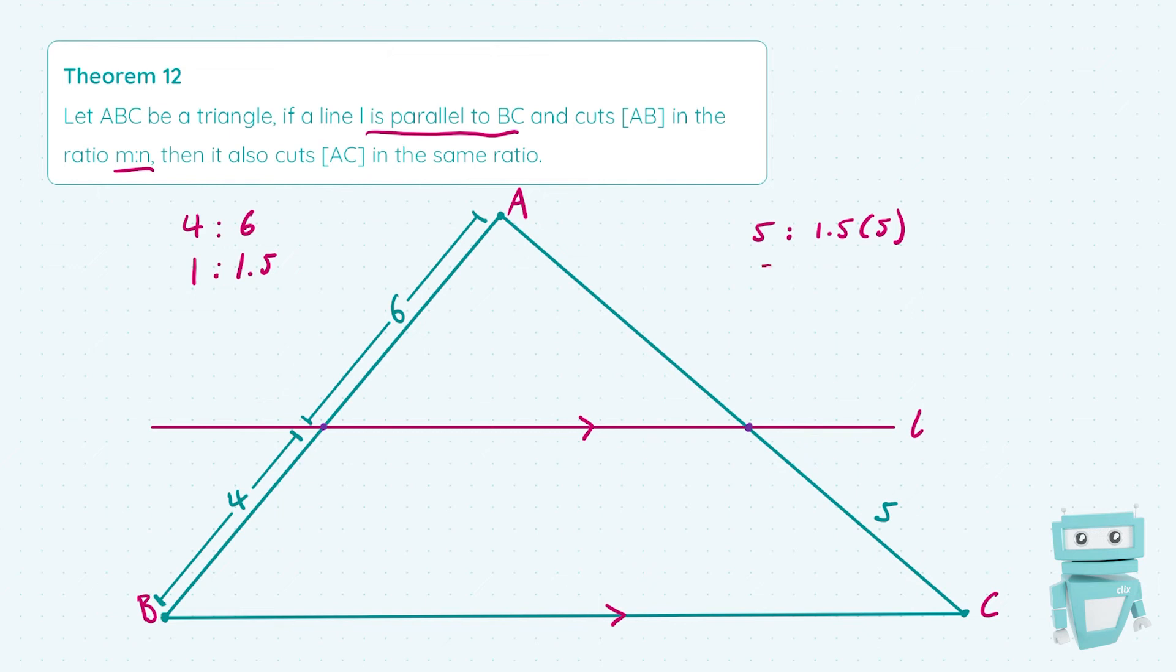So 1.5 times 5 means our ratio on the right-hand side, which is going to be the same as 1 is to 1.5, is 5 is to 7.5. We've just multiplied 5, which was on the left, by 1.5 to get the value for the right, which means that the length from A to where L cuts AC is just going to be 7.5.